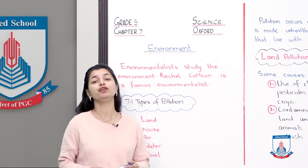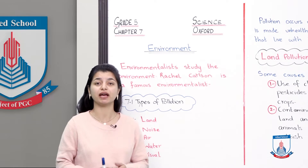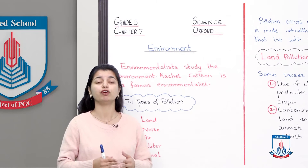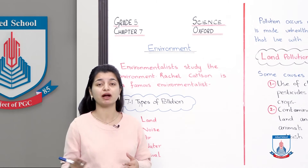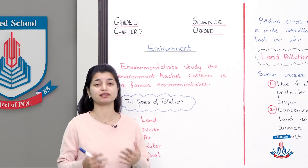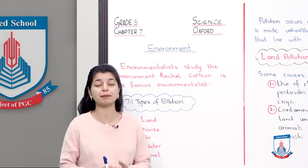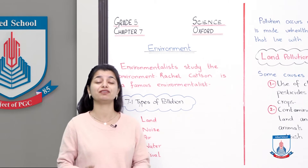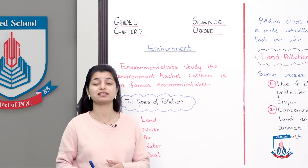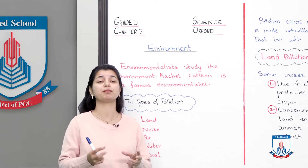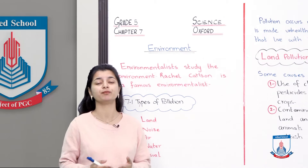Before that, we need to know what environment is. Environment is our surroundings — we can have water surroundings, air surroundings. Different animals live in different environments. If you remember, we discussed that there are habitats in the environment, and there are animals that live in their habitats.